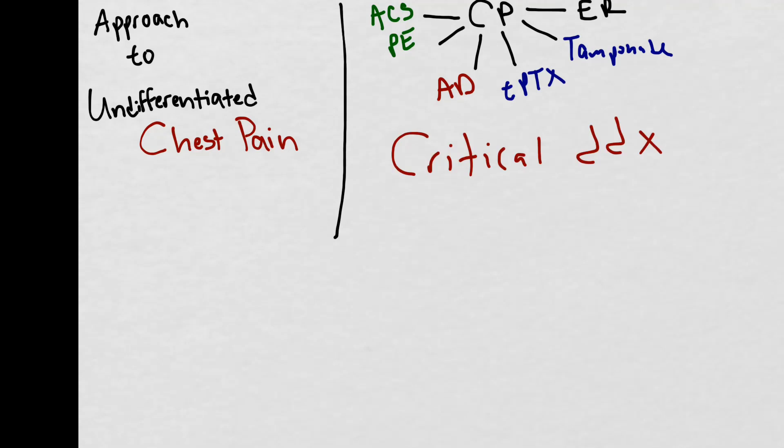The critical differential for chest pain includes the six chest pain killers: esophageal rupture, tamponade, tension pneumothorax, aortic dissection, PE, and acute coronary syndrome. Some people add pneumonia to this differential, but that will not be discussed here.